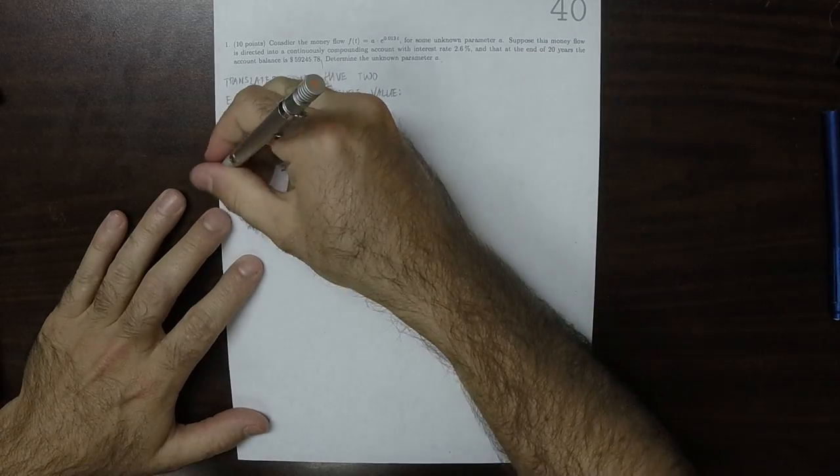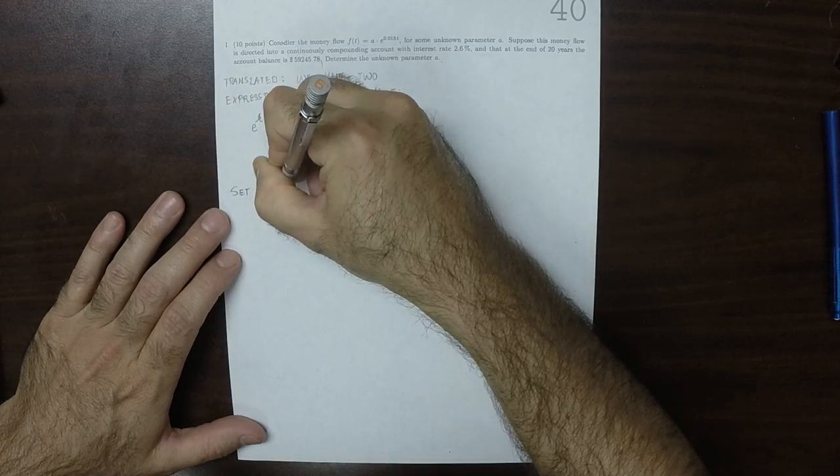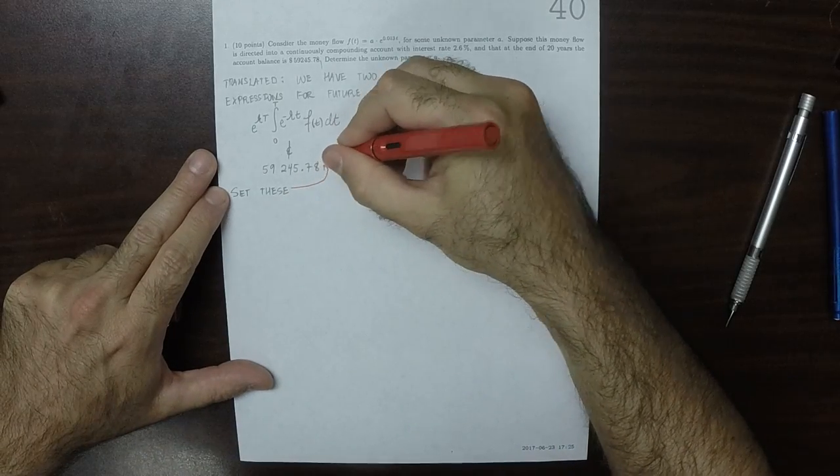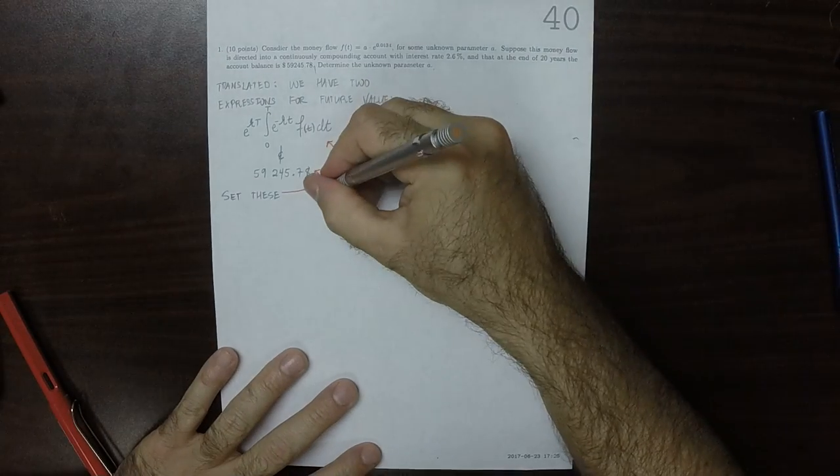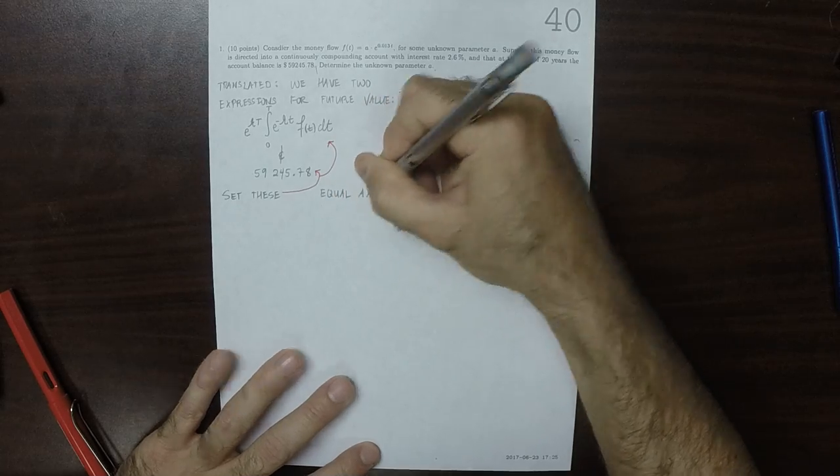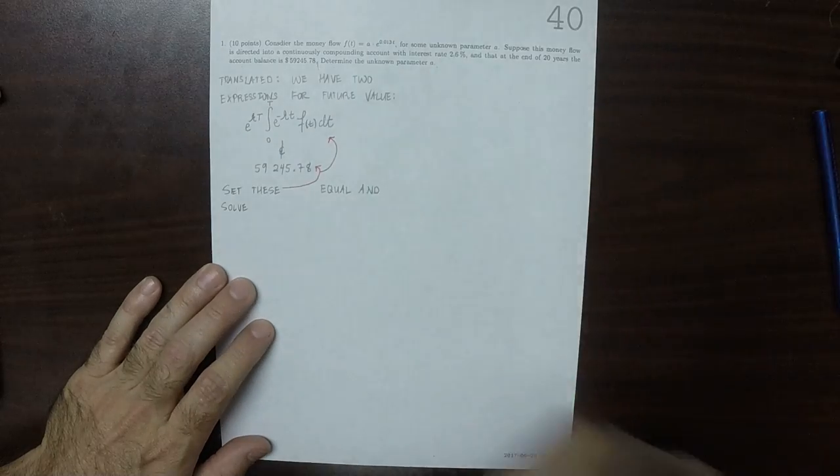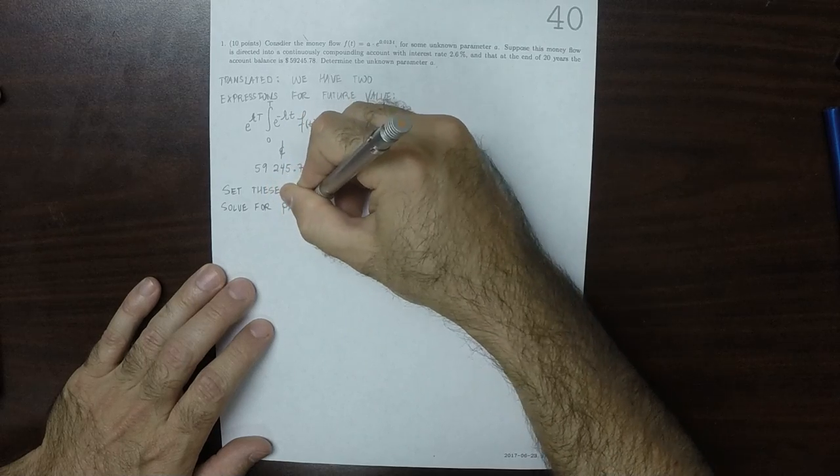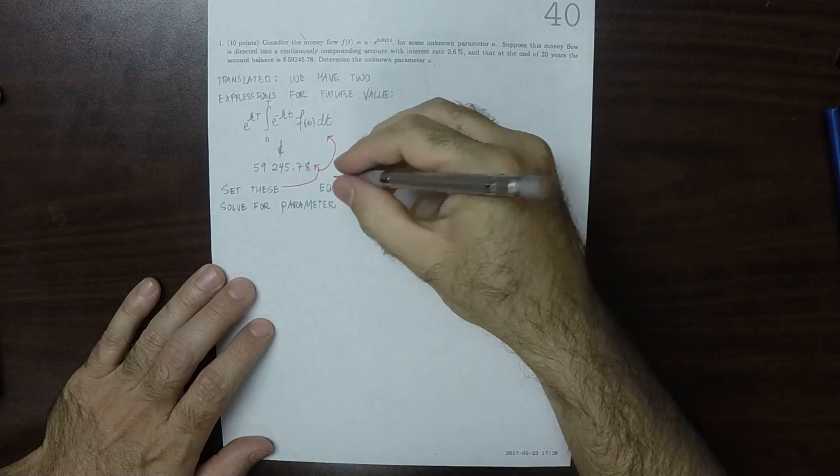So what we're going to do is set these equal, set these two values equal, and solve for parameter A. Parameter A.